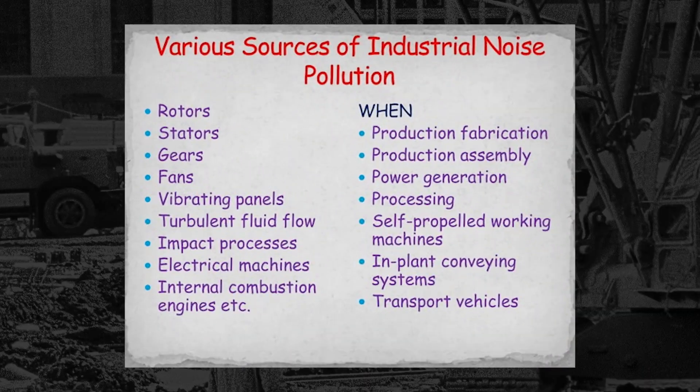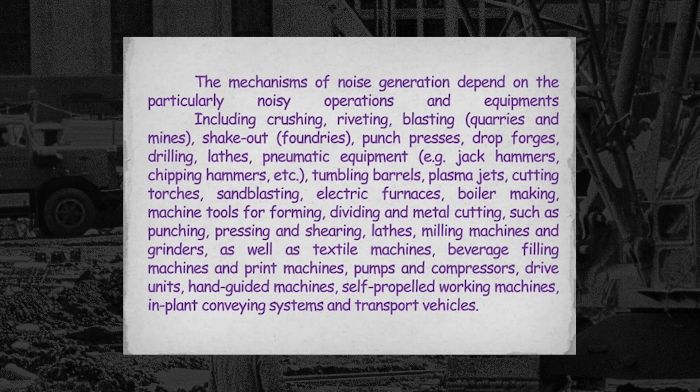Here is a chart of various sources of industrial noise pollution. These include rotors, stators, gears, fans, vibrating panels, turbulent fluid flow, impact processes, electrical machines, internal combustion engines, and various production, fabrication, assembly, power generation, and conveying and transport vehicles. The mechanism of noise generation depends on particular noisy operations and equipment including crushing, riveting, blasting, shake out, punch press, drop forge, and drilling.